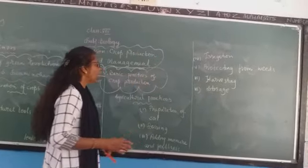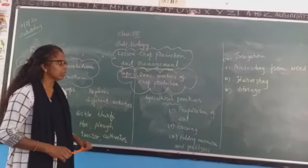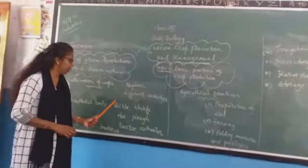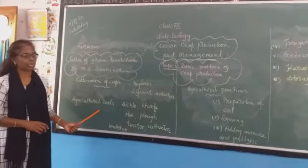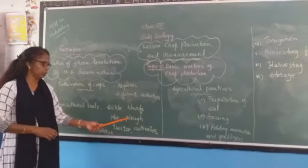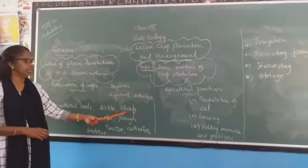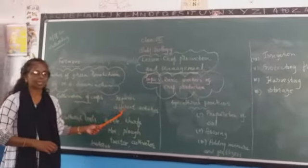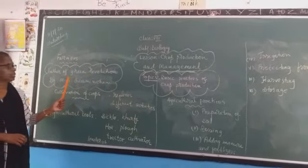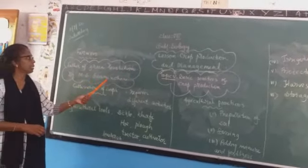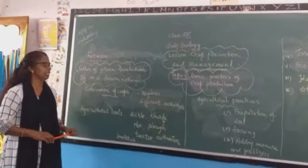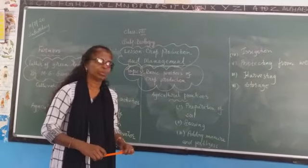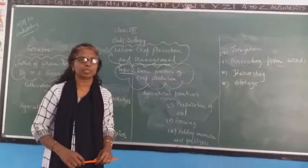So these all are the agricultural practices and different steps. Some agricultural tools you have learnt already: sickle, kurfi, hoe, plough, and others — these all have different functions. Cultivation of crops requires different activities, and Dr. M.S. Swaminathan is known as the father of the green revolution. Okay children, we will conclude this part now and go to the next topic. Thank you children.